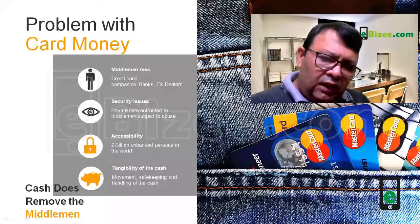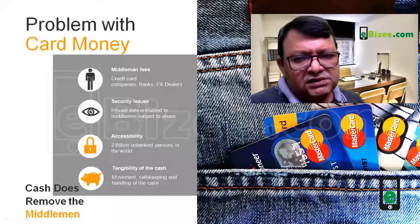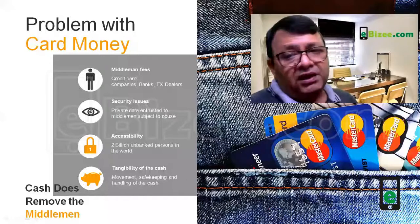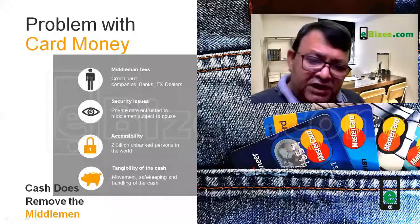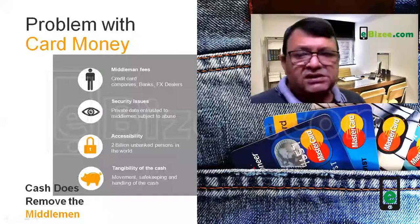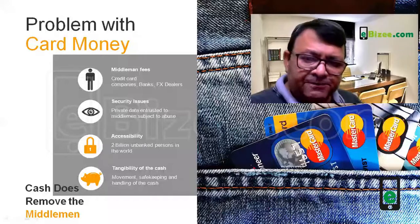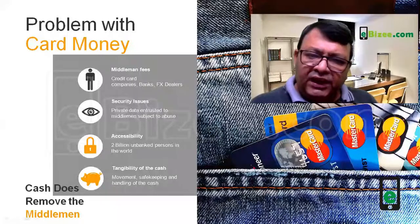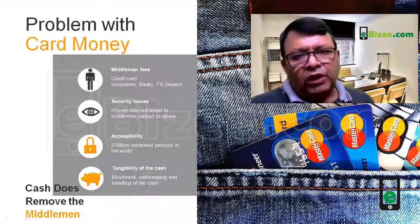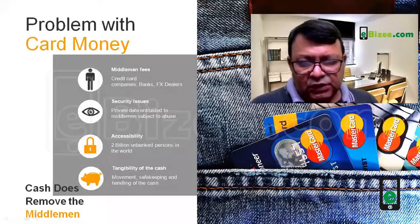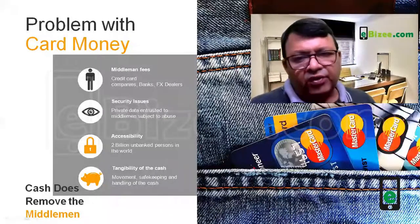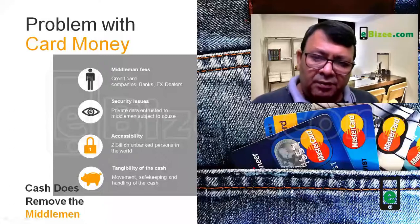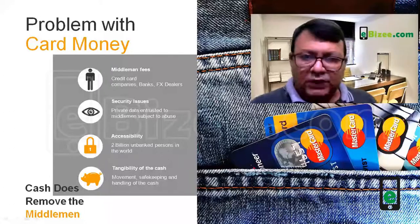The other alternative is cash. Cash is a tangible thing, and when it is tangible, it needs to be physically managed. The physical movement, safekeeping, and handling of cash is very expensive, requiring a lot of effort and security. The tangibility of cash makes it prohibitive to use on a mass scale, especially over long distances. So cash is not the answer in today's world of digital transactions. Although cash does remove middlemen, it is simply not practical.